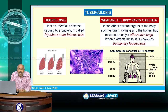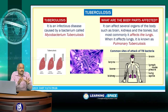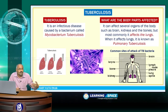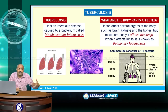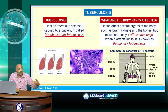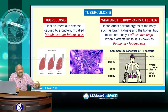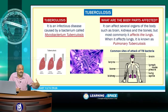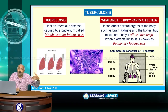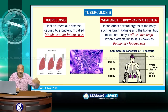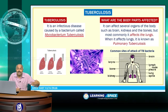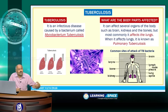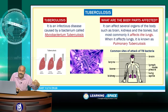Tuberculosis is an infectious disease caused by a bacterium called Mycobacterium tuberculosis. Because of this bacteria, tuberculosis is caused and it can affect several organs of the body such as the brain, kidneys, and the bones, but most commonly it affects the lungs.